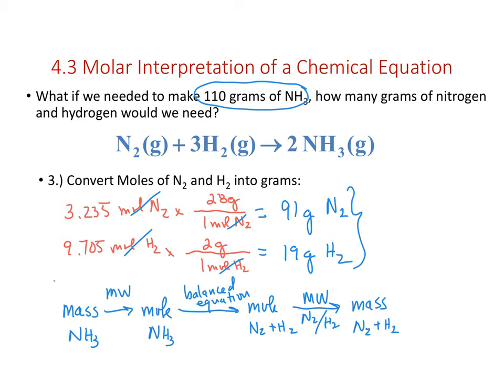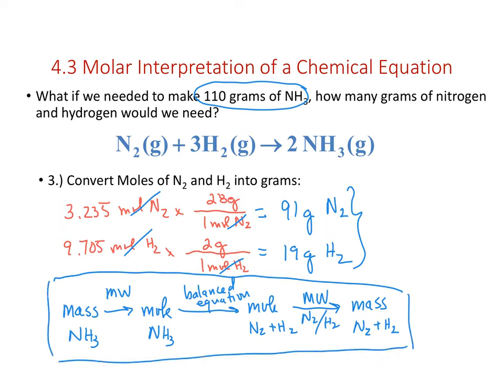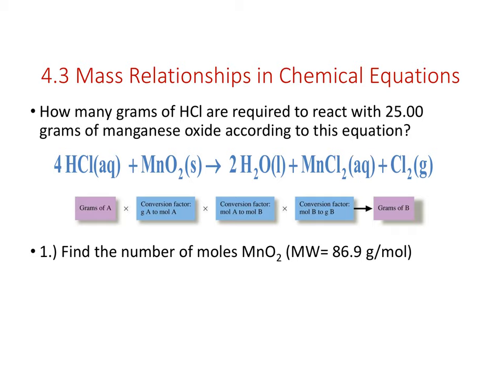You should become very comfortable with this process—comfortable starting at any step—because these calculations work in both directions. You should be able to work from the mass of ammonia all the way to the mass of nitrogen and hydrogen, or if given the mass of nitrogen and hydrogen, work backwards to find the mass of ammonia.